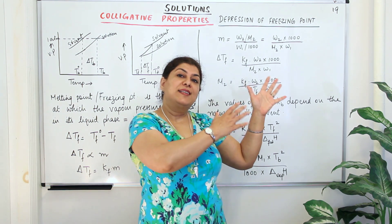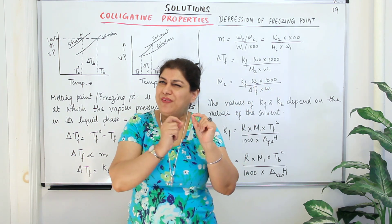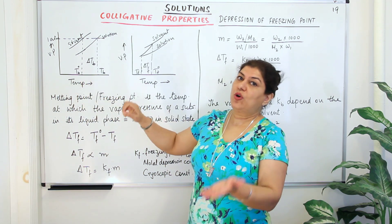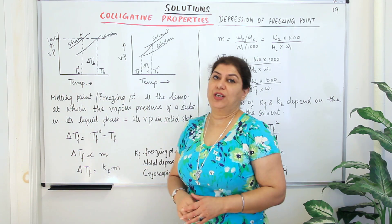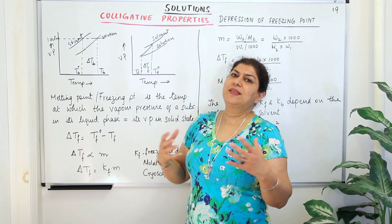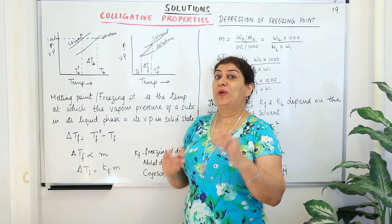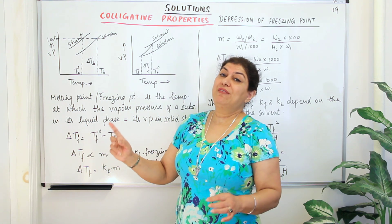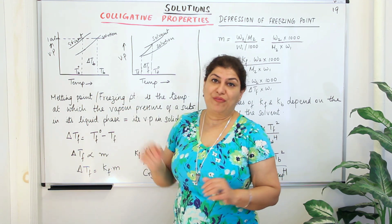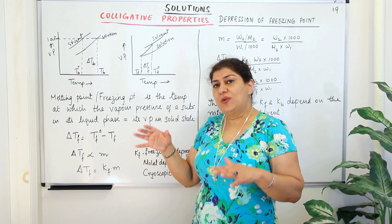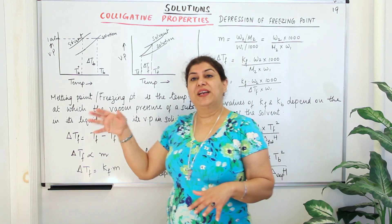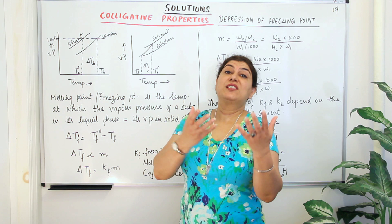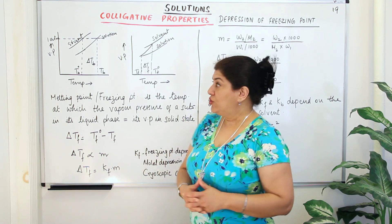Before I discuss the depression in freezing point, let us briefly revise what we did in the previous colligative property where we talked of the elevation in boiling point. The reason there is an elevation in boiling point is understood from the first colligative property — relative lowering of vapor pressure. As a result of relative lowering of vapor pressure, the boiling point of the solution is always higher than that of the pure solvent.